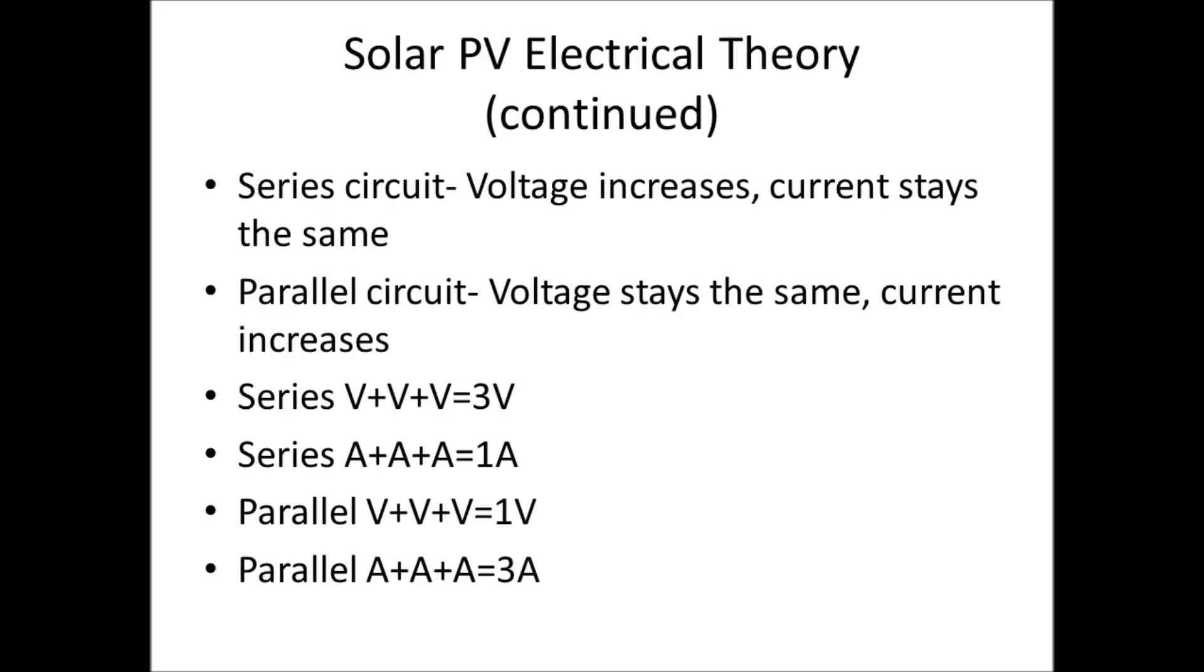In a parallel circuit, one volt plus one volt plus one volt equals one volt. In a parallel circuit, one amp plus one amp plus one amp equals three amps. So the voltage increases and the current stays the same in a series circuit. In the parallel circuit, the voltage stays the same and the current increases.